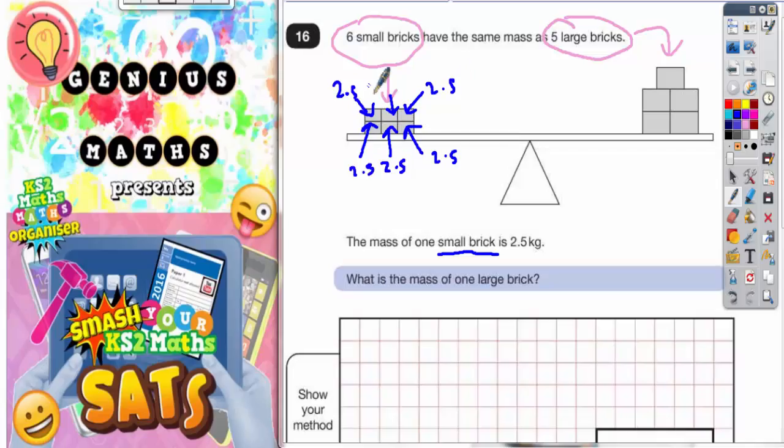Which we can do as a multiplication column method. So here we go, 2.5 multiplied by 6.